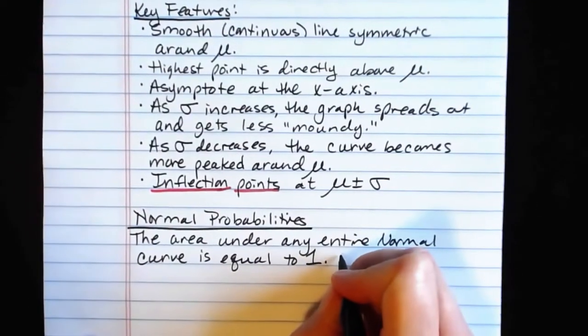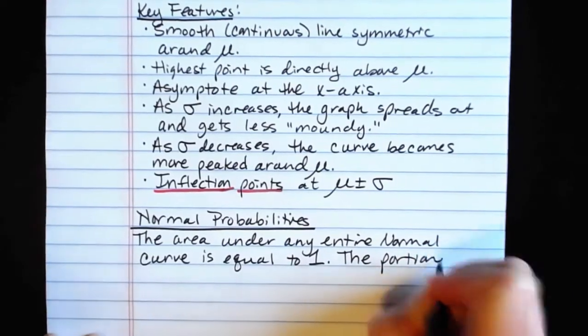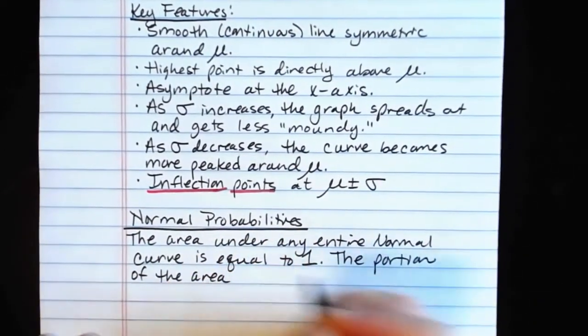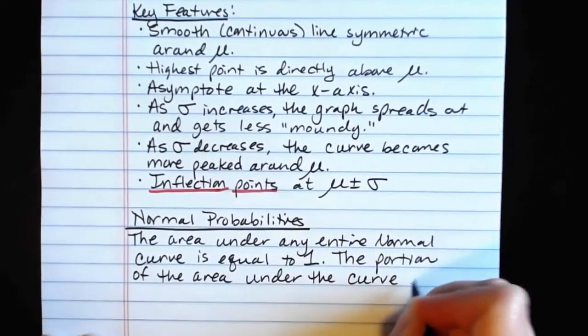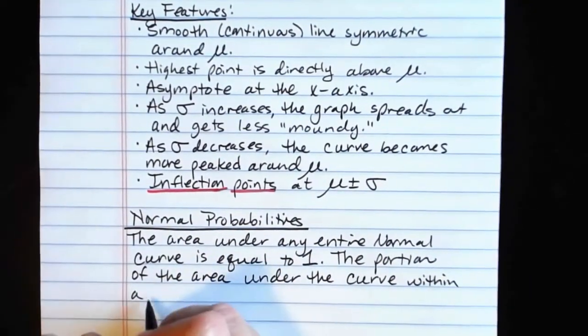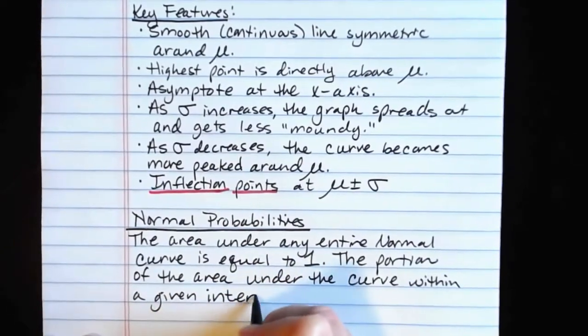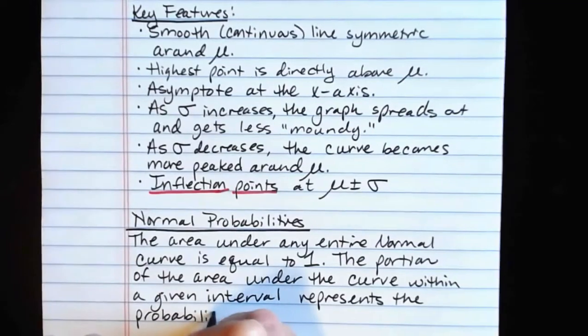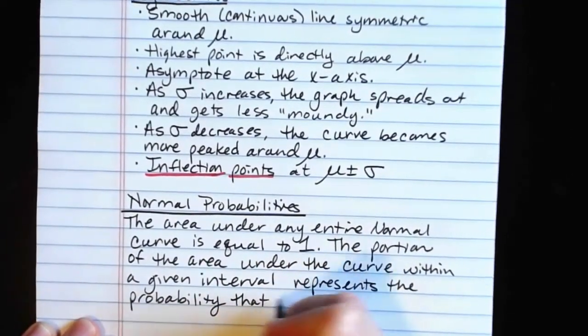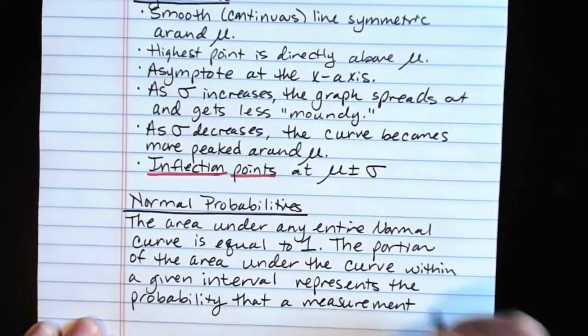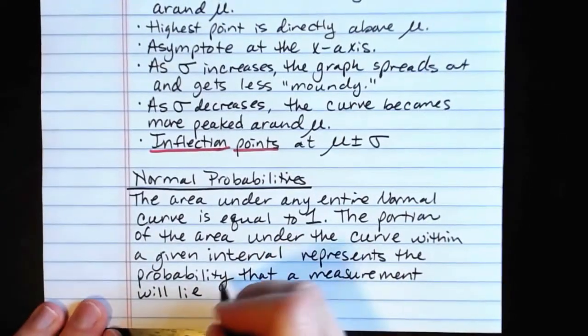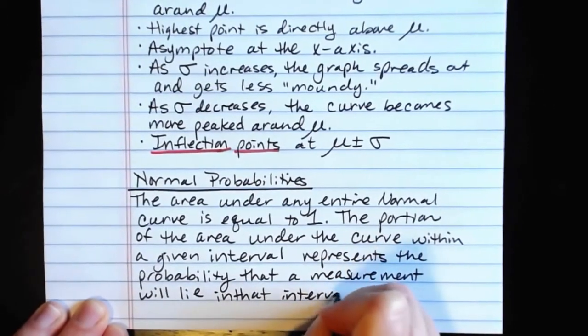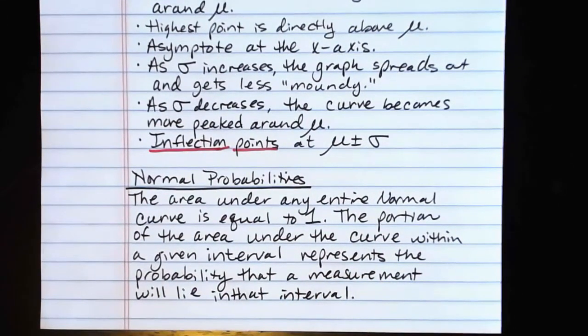Basically, what we're going to do is we're going to make use of the fact that the portion of the area under the curve within a given interval under the curve represents the probability that a measurement will lie in that interval. So because the area under any normal curve is equal to one, we can treat that curve as though it represents, the area underneath it represents the probability of falling into a particular area.